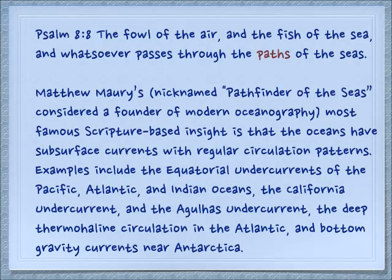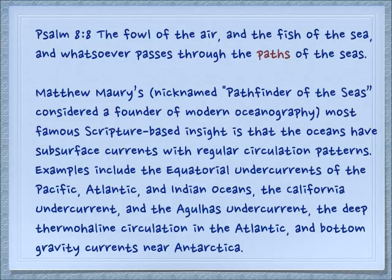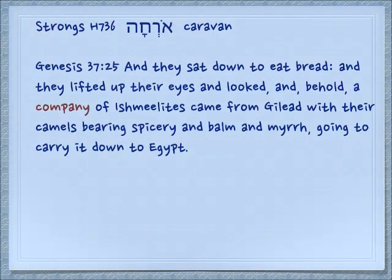He took many scriptures quite literally and made application to the ocean. His most famous scripture-based insight, based on Psalm 8:8, was that there are paths in the sea — that the oceans have subsurface currents with regular circulation patterns. Some examples include the equatorial undercurrents of the Pacific, Atlantic, and Indian Oceans, the California undercurrent, the Agulas undercurrent, the deep thermohaline current in the Atlantic, and bottom gravity currents near Antarctica. So he literally applied the Bible and made an amazing discovery. Derived from this root, we have the word caravan — a group of people who are on the way, on a path to somewhere.